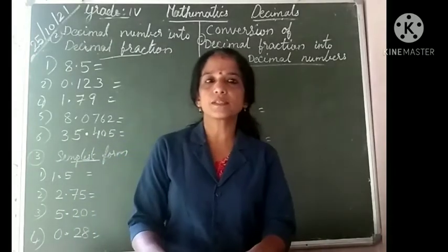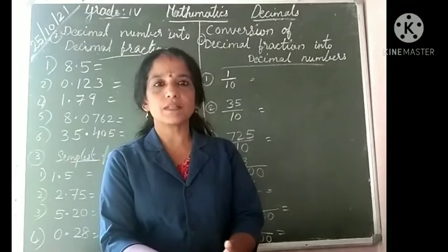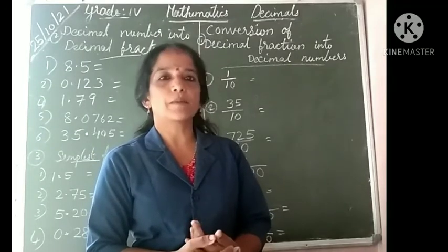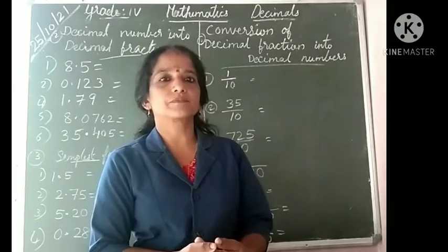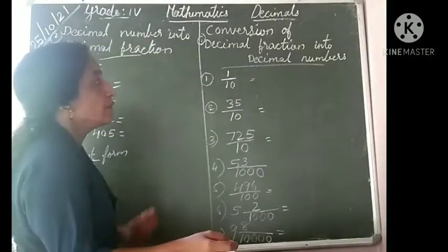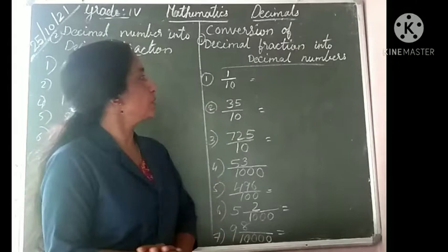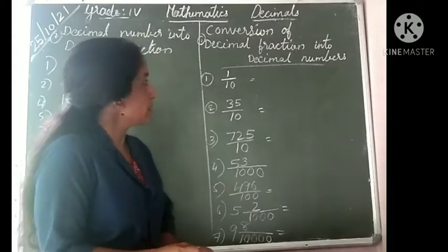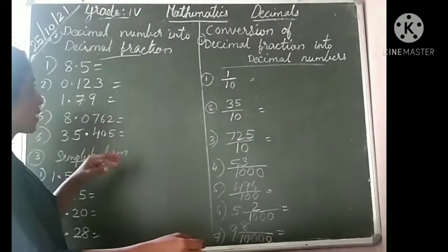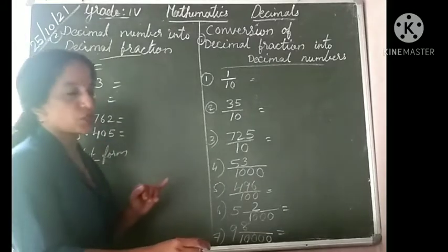Good morning students. Now we are going through the chapter decimals. Last day we studied about the Abacus. Today's topic is conversion — conversion of decimal fraction into decimal numbers, and decimal numbers into decimal fraction and changing them into simplest form.